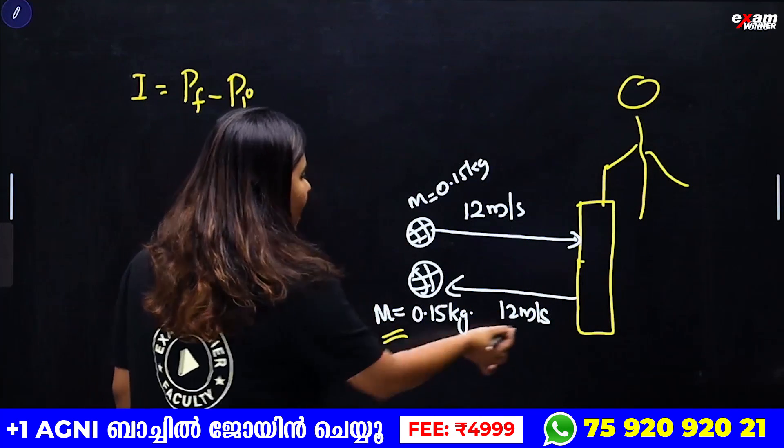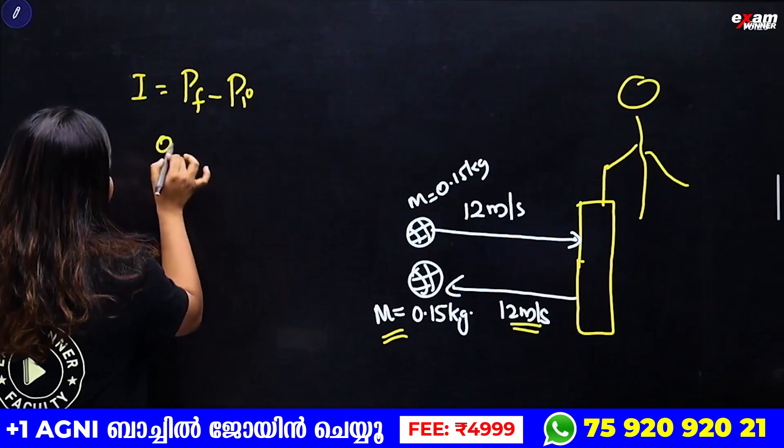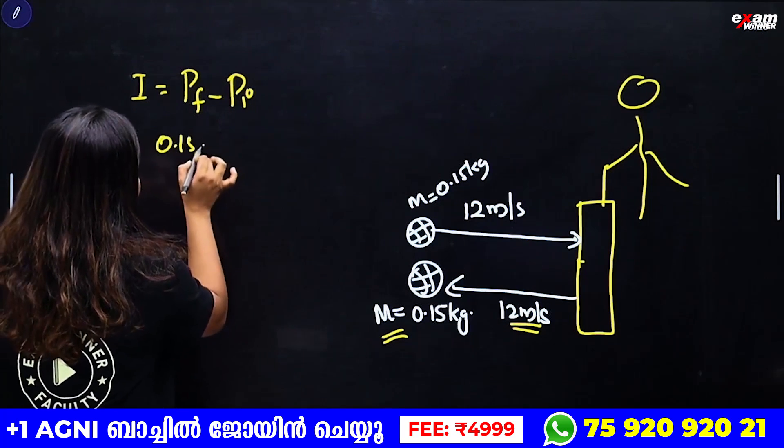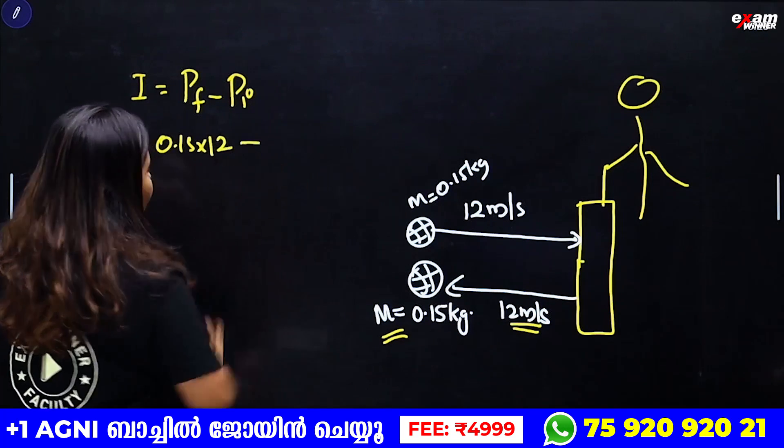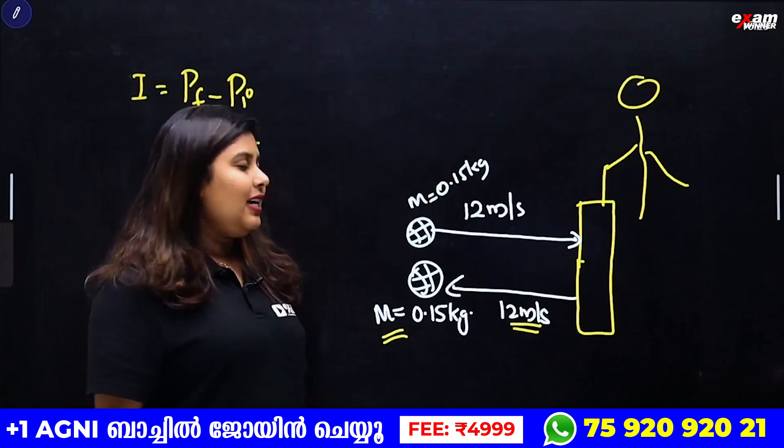Impulse = mass × velocity = 0.15 × 12 for the final momentum minus the initial momentum. Since the ball reverses direction, we must assign signs carefully.